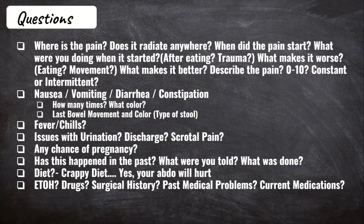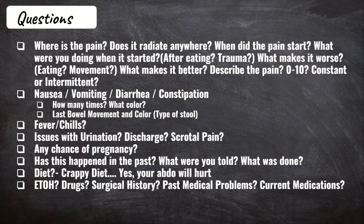Gray stool can be caused by liver and gallbladder issues. Green vomit is bilious in nature, possibly signaling an obstruction in the GI tract, while green or yellowish stool can signal an infection. For constipation, ask when was the last bowel movement and what type of stool — small lumps signal severe constipation. A patient presenting with constipation, nausea, vomiting, and abdominal pain can signal an obstruction somewhere in the GI tract.